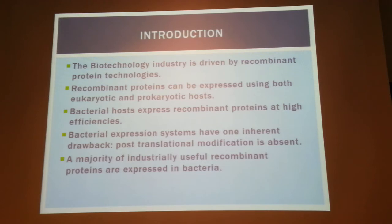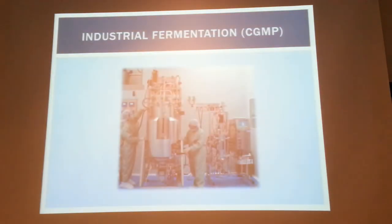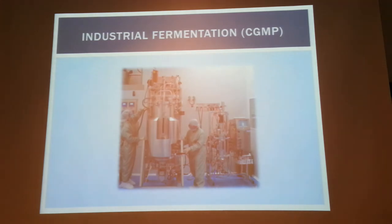Because CHO cell lines are so expensive to maintain, we refer back to bacteria. A majority of industrial proteins such as enzymes are expressed in E. coli. E. coli is also amenable to scale-up — you can scale up production in a bioreactor, which is a key advantage.